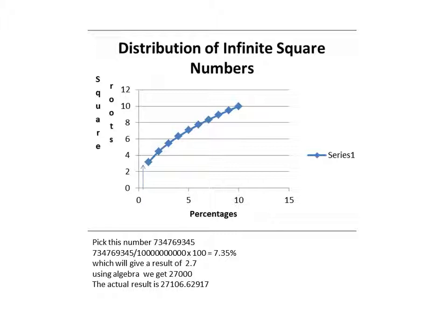If you follow that arrow and you go across the y-axis, you'll get 2.7. But since you have a big number, you use some algebra and you get 27000. And the actual result is 27106.62917.